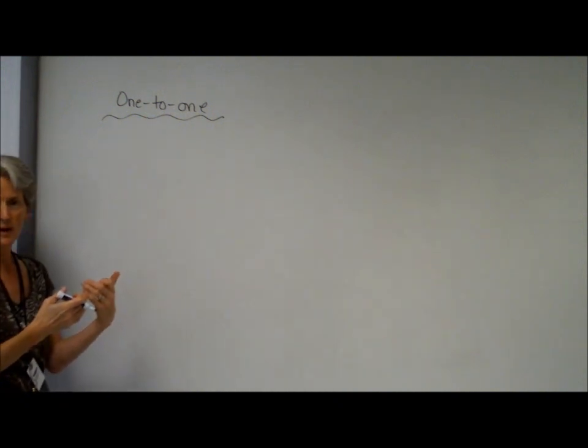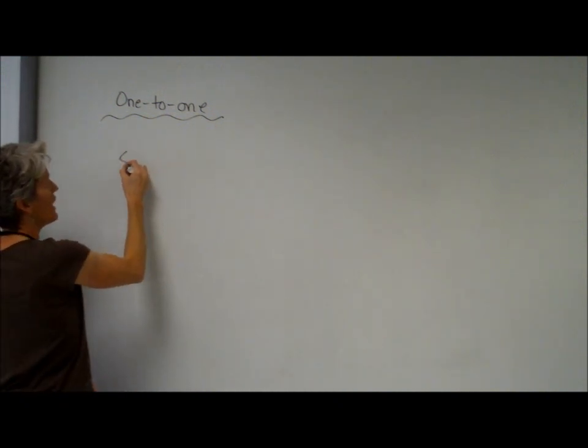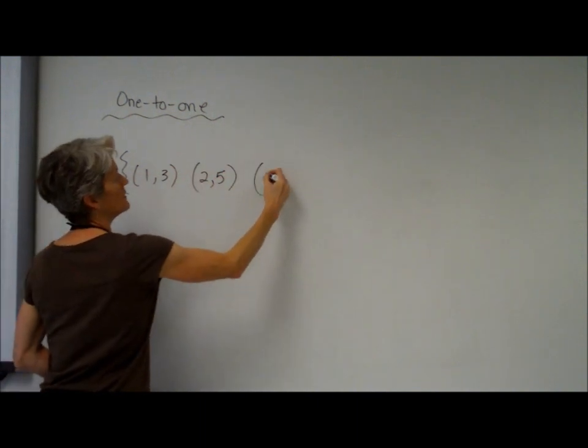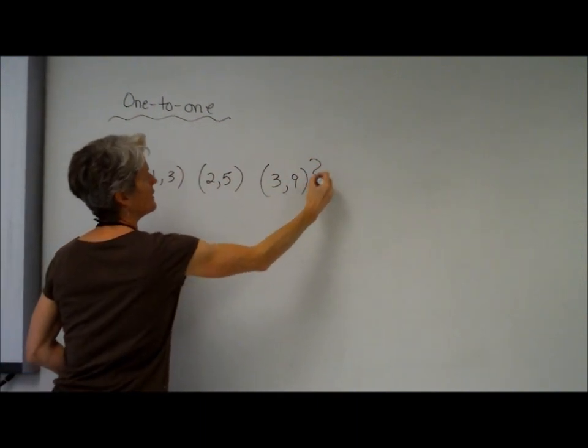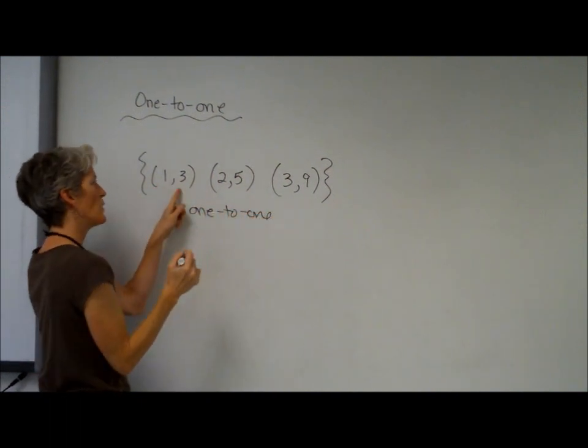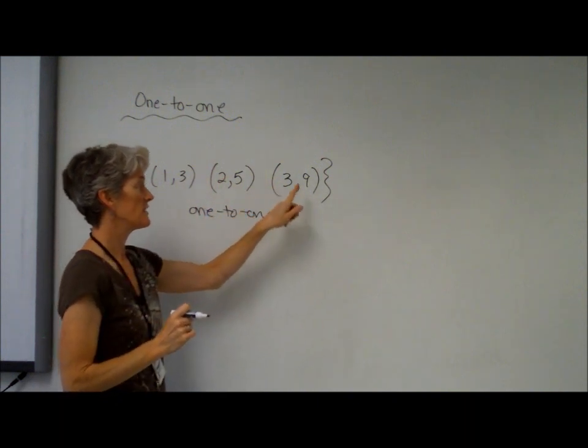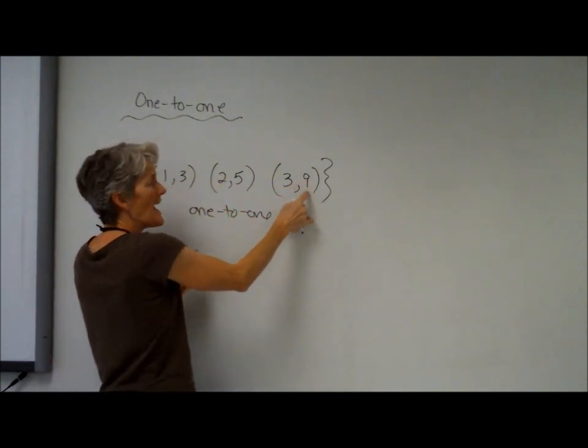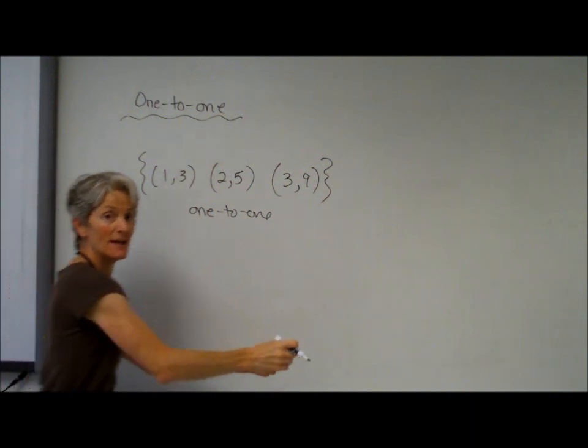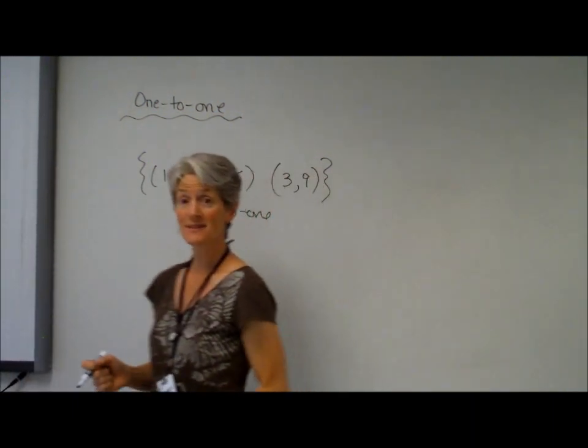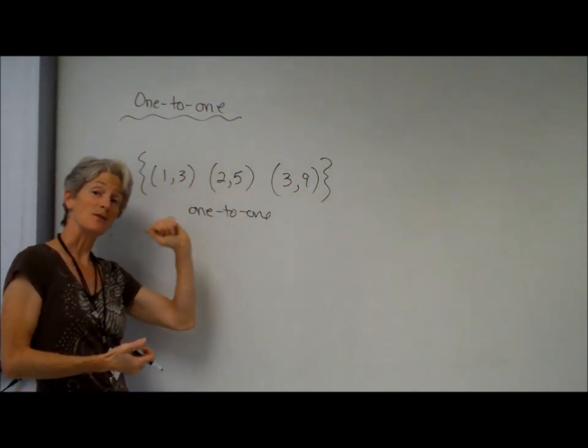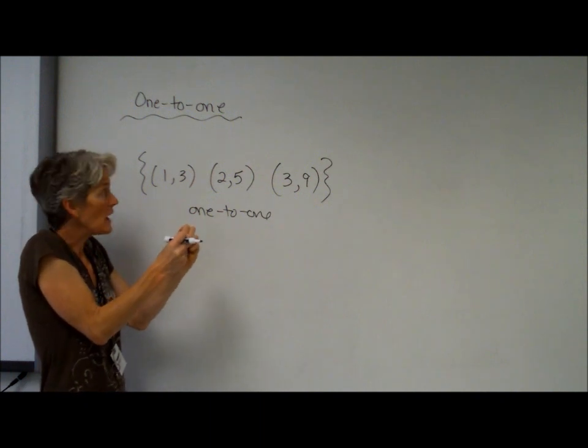So if you have, for example, a set of ordered pairs like this, this would be one-to-one because each x has a y and each y has an x. It's a function in both ways. The function is a function and its inverse is a function. Each input has exactly one output, each output has exactly one input.